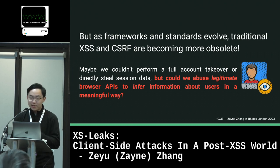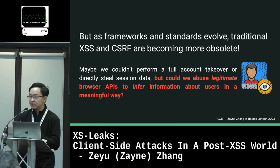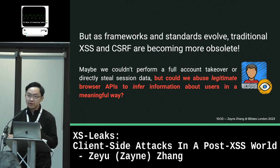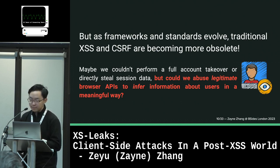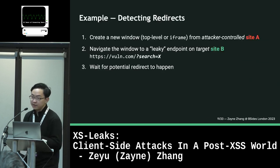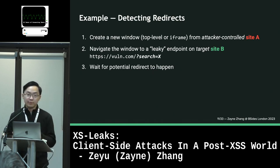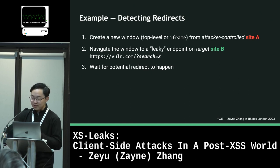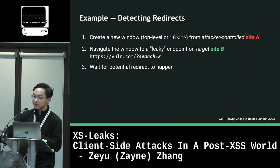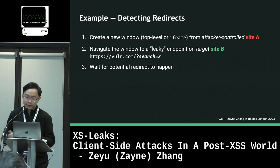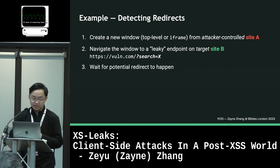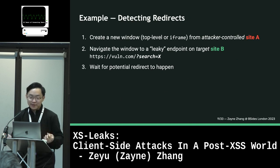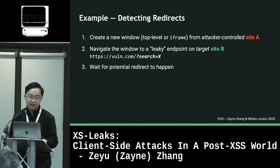The idea of XS leaks is that maybe we couldn't execute JavaScript, maybe we couldn't perform a full account takeover or directly steal session data, but could we still somehow abuse legitimate browser APIs to infer information about users in a meaningful way? The first example I want to dig into: there might be a scenario where we want to detect whether a specific URL results in a redirect. Some URLs might serve as search endpoints — if a result is not found, it might redirect back to the main page, and if the result was found, it might not redirect. There might be a scenario where we can leak user state by detecting whether a redirect happens.